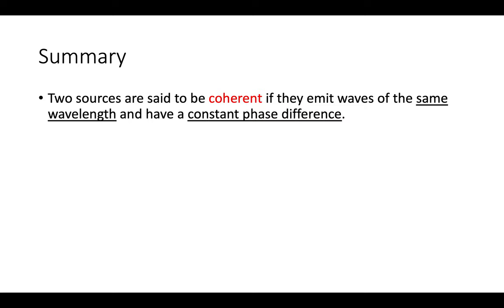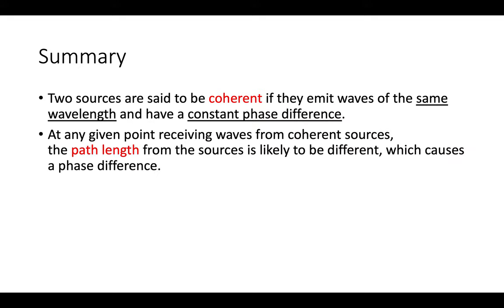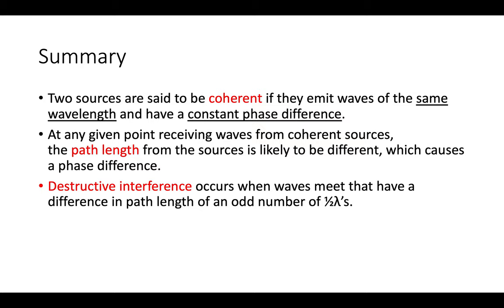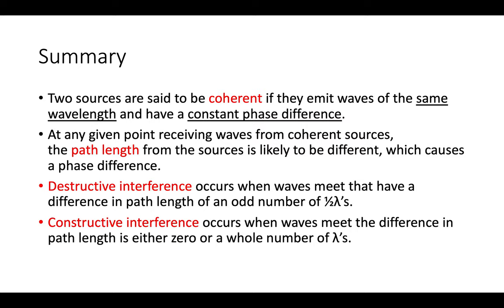To summarize: two sources are coherent if they emit waves of the same wavelength with a constant phase difference. At any point receiving waves from a coherent pair, the path lengths from the two sources are likely to be different, causing a phase difference. Where the path difference is an odd number of half wavelengths, we get destructive interference — waves anti-phase, 180 degrees out. Where the path difference is zero or a whole number of wavelengths, waves are in phase and we get constructive interference.